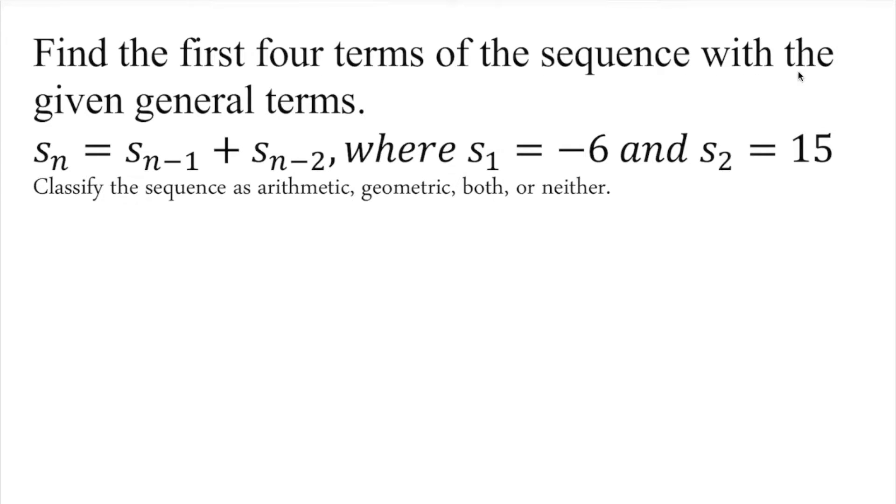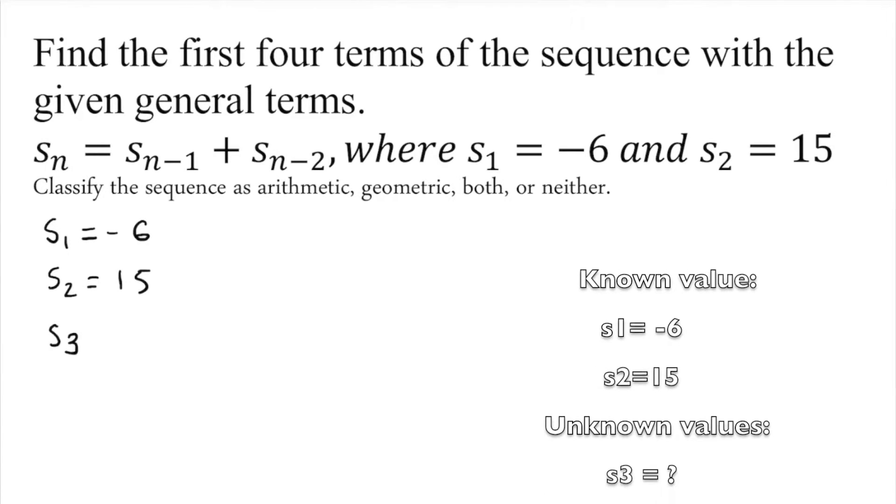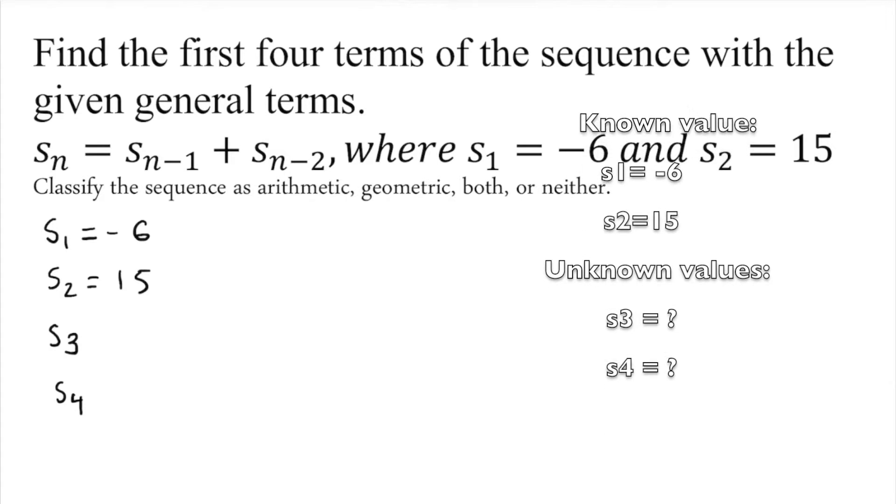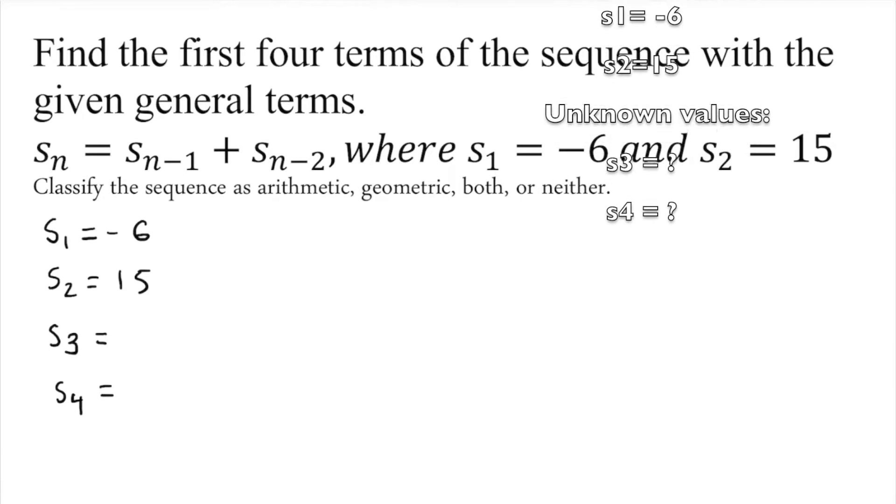Find the first four terms of the sequence with the given general term: s_n equals s sub n minus one plus s sub n minus two, where s_1 equals negative six and s_2 equals 15. We're given s_2 which is 15, and we're gonna look for s_3 and s_4. This is what we're gonna look for. Start with the first general term.